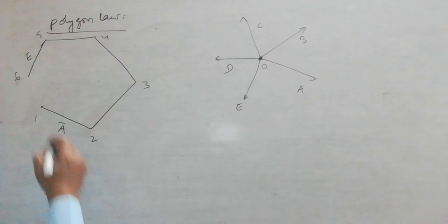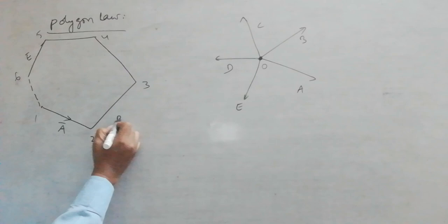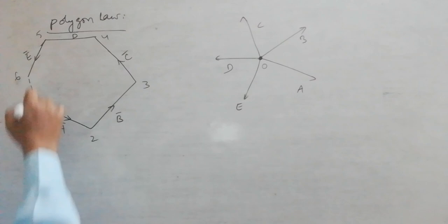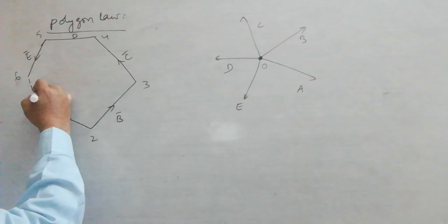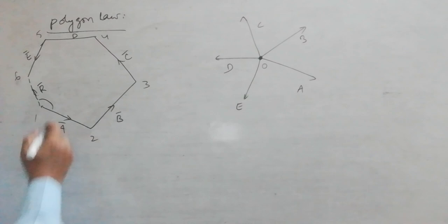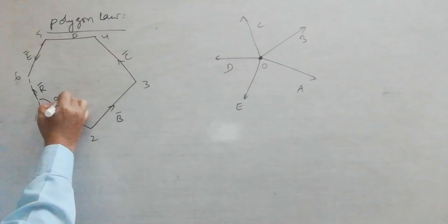Here we have the closing side of the polygon. This is the order in which we are taking the vectors: vector A from 1 to 2, vector B from 2 to 3, vector C from 3 to 4, vector D from 4 to 5, and vector E from 5 to 6. Now the closing side is from 6 to 1, but the closing side taken in reverse order will represent the resultant in magnitude as well as in direction. The first vector is the reference, so with respect to the first vector, its angle alpha can be formed like this.